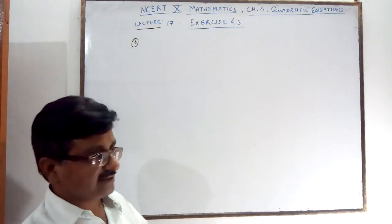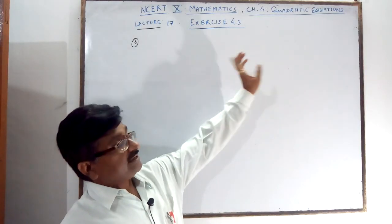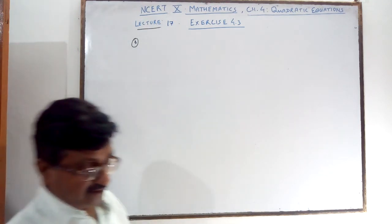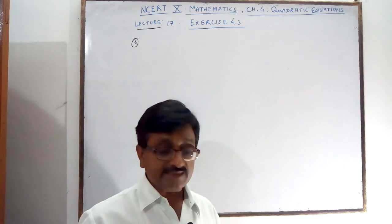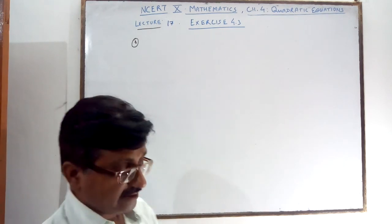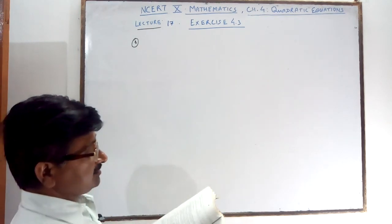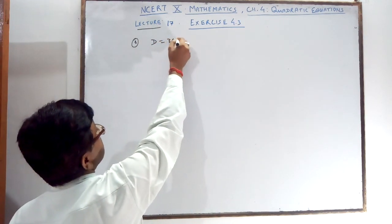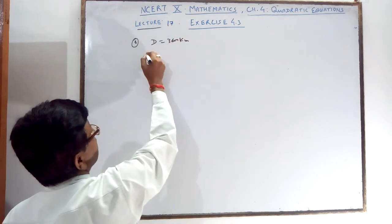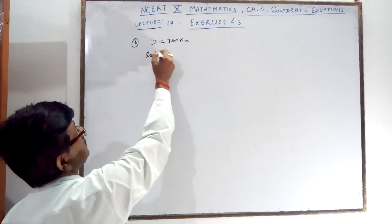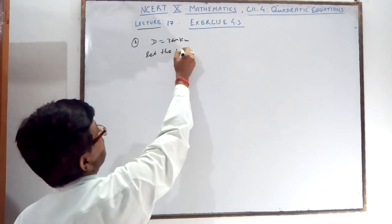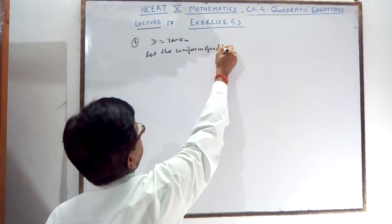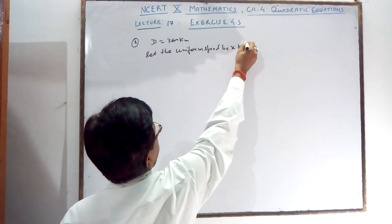Friends, here Akhin Srivastava teaching you math. What is the equation exercise 4.2, question number 8? In question number 8, it is given the distance covered by a train. Distance 360 km is given. And by a train with uniform speed, let the uniform speed be x km per hour.